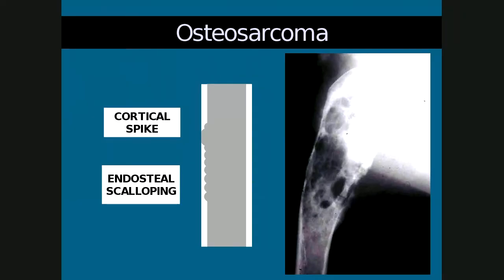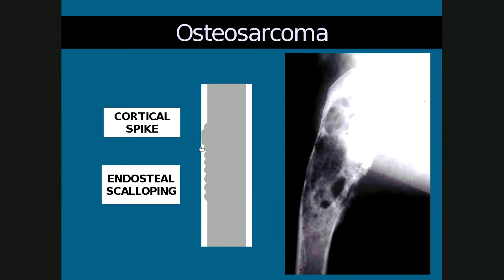The schematic image shows that endosteal scalloping comes from the endosteal side because the neoplasm is on the inside, pushing out as it grows and lysing the bone. Here is also an example of cortical spike formation, which occurs once the cortex has been eaten through from the inside, forming little spikes.